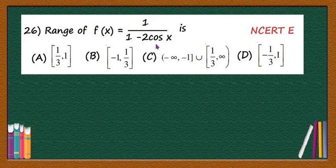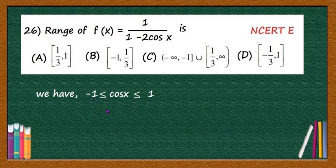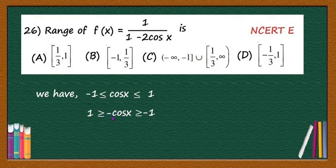For that, you know that cos x lies between -1 and +1. Now, multiplying a minus sign to this inequality, the inequality reverses. That is, if you multiply -1 with -1, you will get 1 ≥ -cos x ≥ -1.